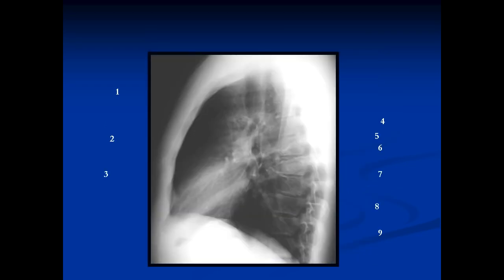Now we'll go on to the lateral chest film. A lot of medical students and doctors tend to avoid the lateral film because they find it difficult. But if you concentrate on the airways in the center — you can see the trachea coming down and where it bifurcates below — then you can describe the structures in front of and behind the trachea. This is the right pulmonary artery, which sits in front of the airway on the right side.